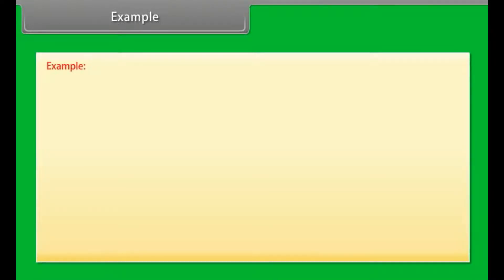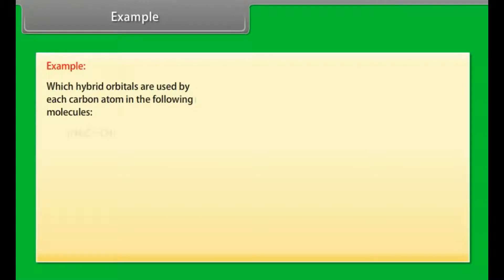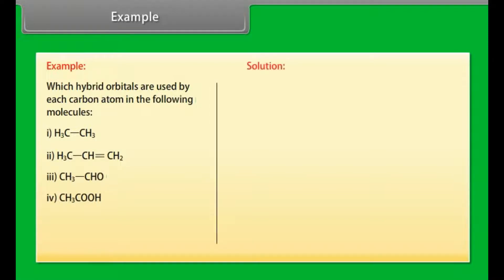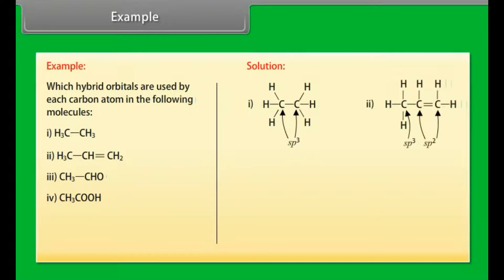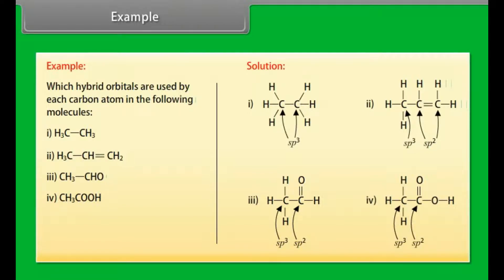Let's take an example on hybridization: which hybrid orbitals are used by each carbon atom in the following molecules? In the first molecule, carbon atoms use SP3 hybridization. In the second molecule, carbon atoms use SP2 and SP3 hybridization. In the third molecule, carbon atoms use SP2 and SP3 hybridization. In the fourth molecule, carbon atoms use SP2 and SP3 hybridization.